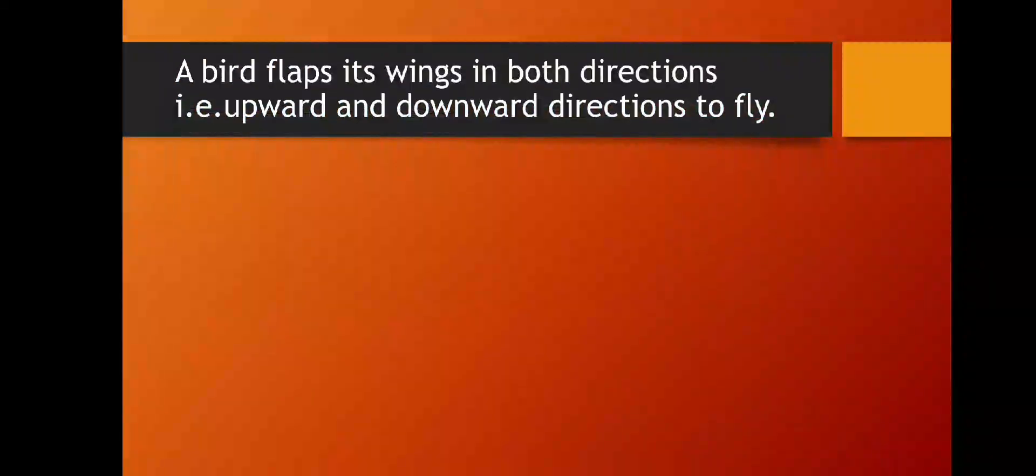A bird flaps its wings in both directions. Birds move their wings in two different directions - upward and downward - to fly. They move their wings up and down.